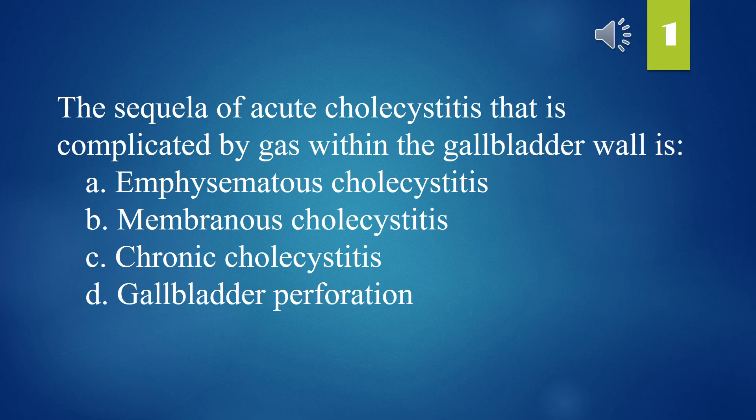The sequelae of acute cholecystitis that is complicated by gas within the gallbladder wall is: A. Emphysematous cholecystitis. B. Membranous cholecystitis. C. Chronic cholecystitis. D. Gallbladder perforation. The answer is A. Emphysematous cholecystitis.